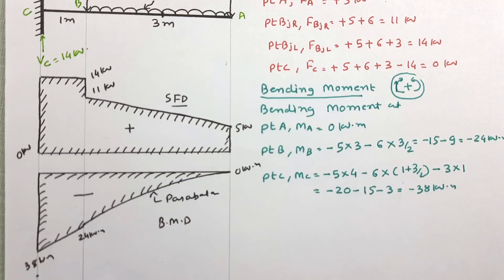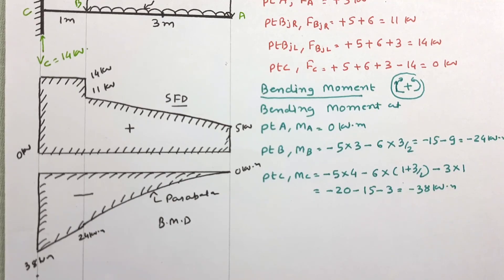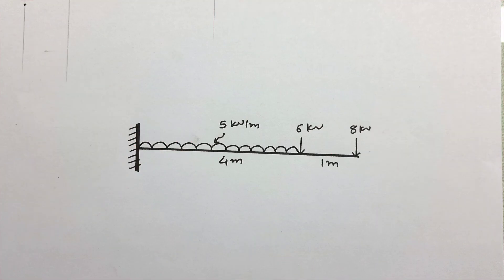This is how we draw the shear force and bending moment diagram when UDL and point loads are given on a cantilever beam. I am giving you a similar problem for homework — please solve it. If you have any query, please write in the comment box. Thank you very much for watching this video.